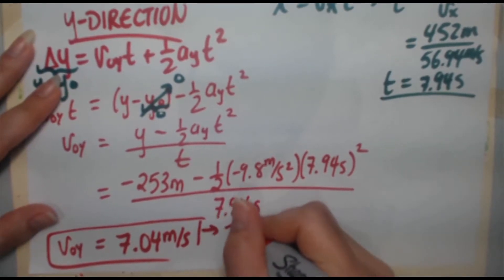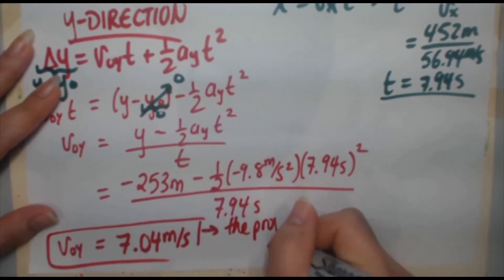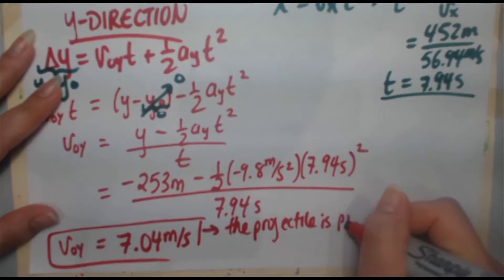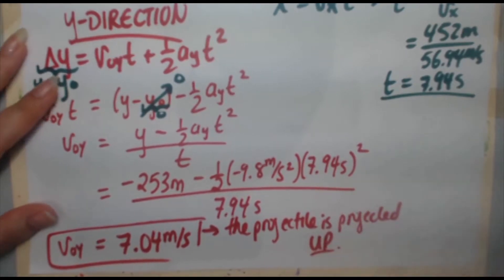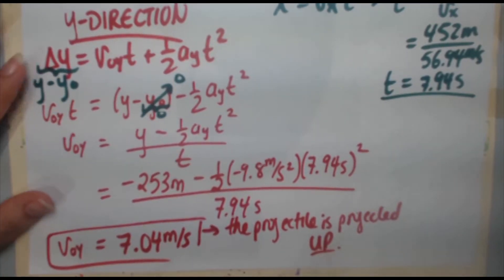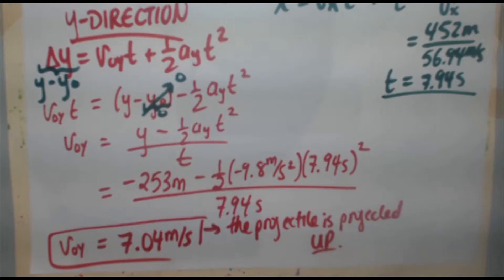Now, because this is a positive velocity, that means the projectile is thrown up or projected up in the beginning. The projectile is projected up, because we defined up to be positive. So there we go, there's our initial speed of the projectile.